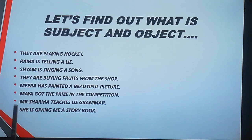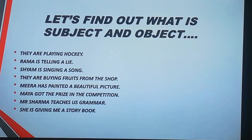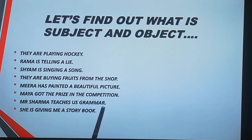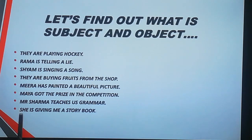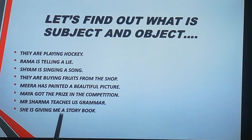Pay attention students. In the next sentence, there are two types of object. Mr. Sharma teaches us grammar. Who teaches us grammar? Mr. Sharma. Whom does he teach? Us. So 'us' is an indirect object. And what does he teach? He teaches us grammar. Grammar is direct object. She is giving me a story book. Who is giving a story book? She. So she is subject. Whom is she giving? Me. So 'me' is an indirect object. And what is she giving? She is giving a story book. So a story book is a direct object.